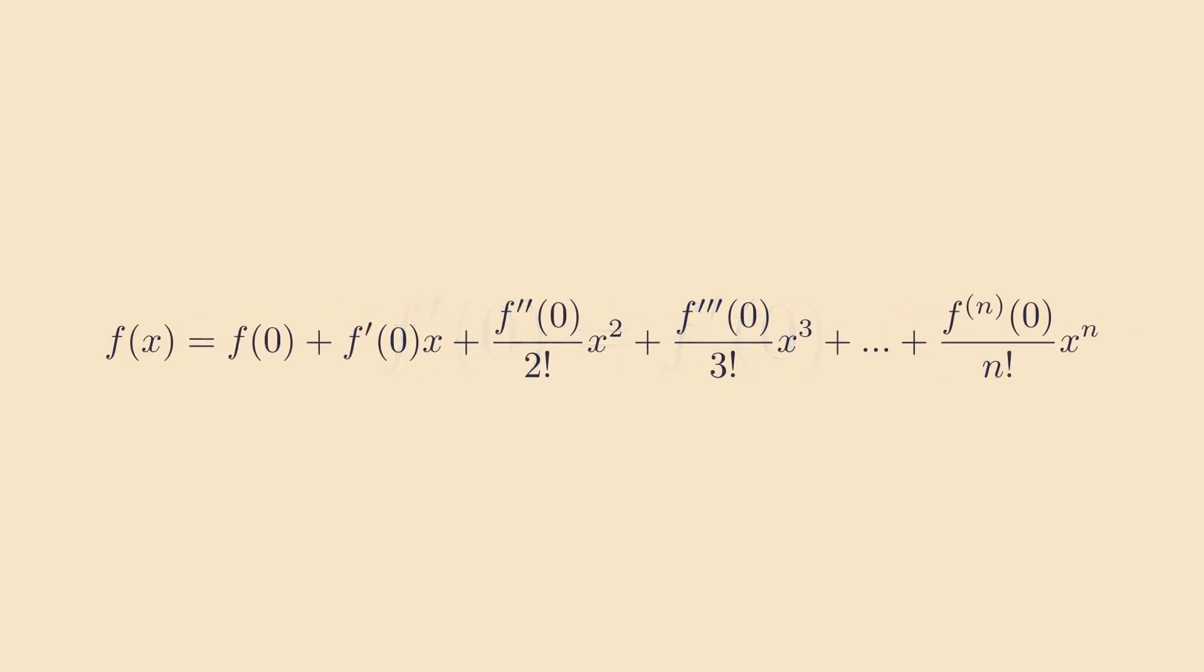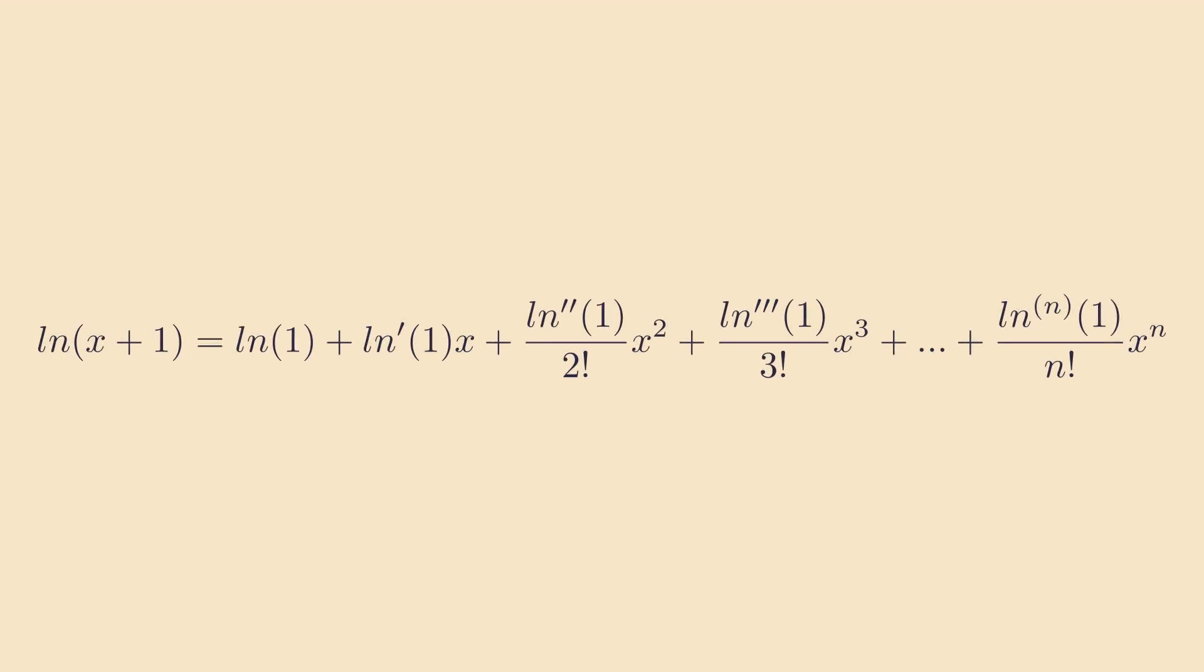Now, these factorials may look scary, but they really just emerge naturally to cancel out the extra factors of multiplication from the power rule. Because of notation, you might sometimes see Taylor series written in a weird form like this. It might be weird to see the Taylor series of natural log of x still include some ln terms, but notice on the right side, the natural logs are all just representing the derivatives.